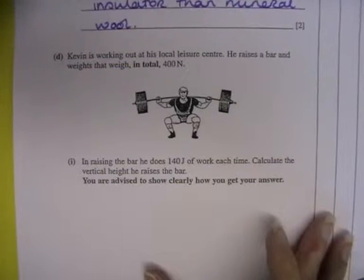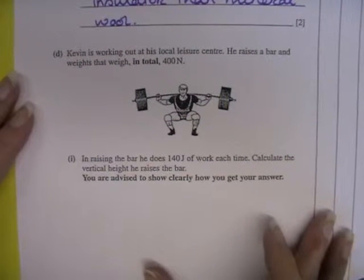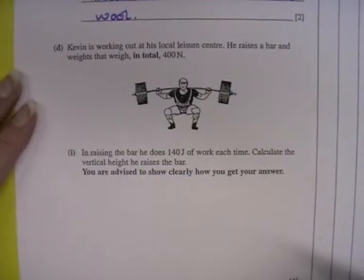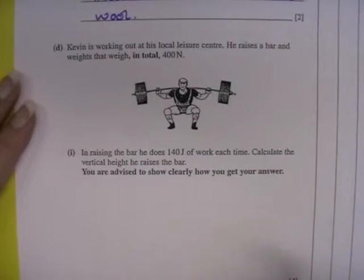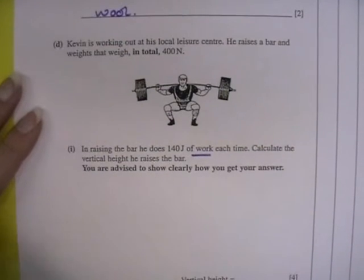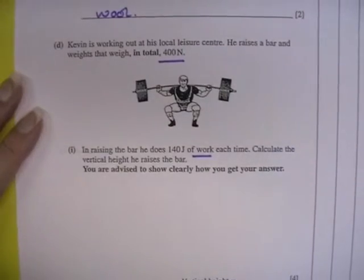Kevin is working out at his local leisure centre. He raises the bar and weights that weigh in total 400 newtons. In raising the bar he does 140 joules of work each time. Calculate the vertical height he raises the bar. So we are looking at work done and we are given a weight or a force.